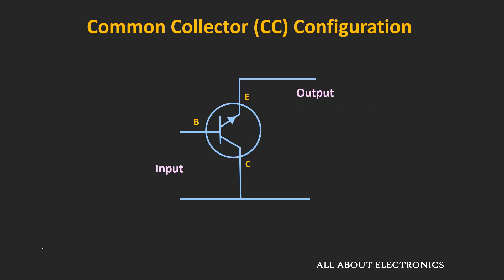In the common collector configuration, the collector terminal is common between the input and the output side. That means the input is applied between the base and the collector terminal, and the output is measured between the emitter and the collector terminal.